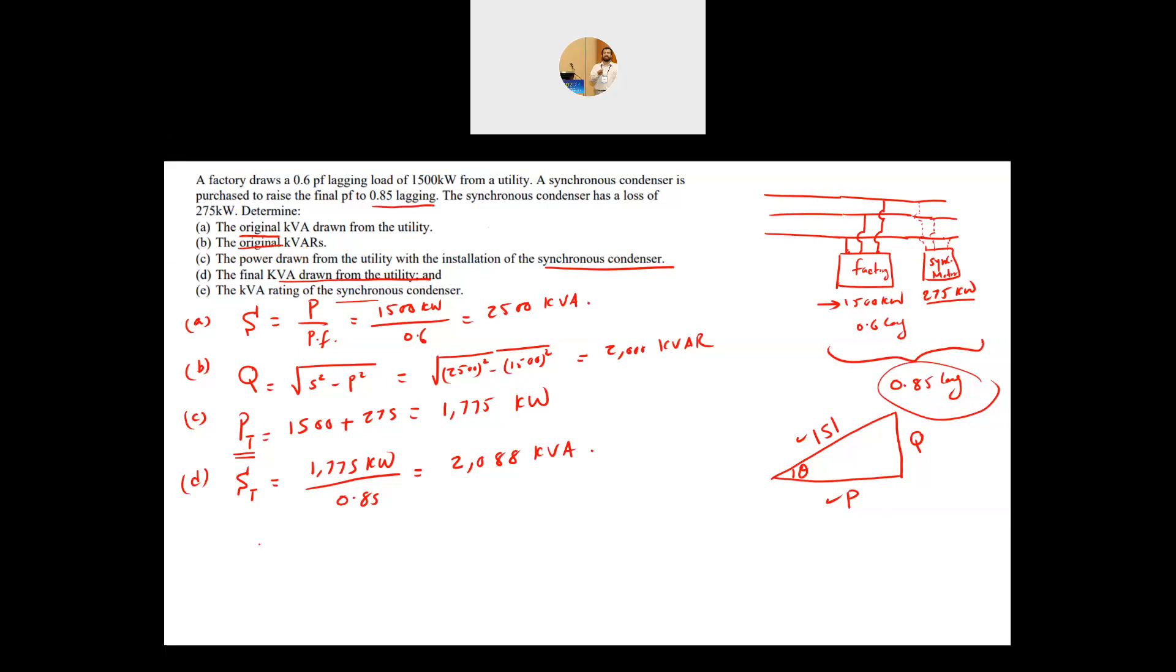Finally, the kVA rating of the synchronous condenser. What is the kVA? We only know P from the synchronous condenser, we don't know the power factor for that. So how to find this? First you need to find Q total after adding the condenser, the Q for both the factory and the synchronous condenser when you add them together, which is equal to the total, the S total square minus the P total square. So this will give me 2088 square minus 1775 square and this will give me 1100 kVAR.